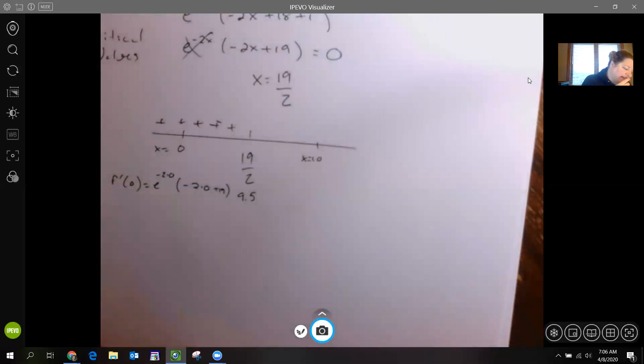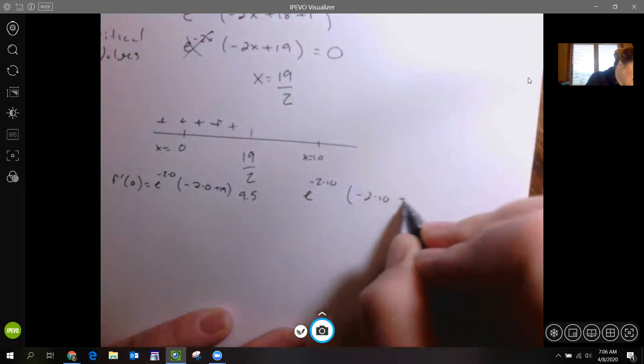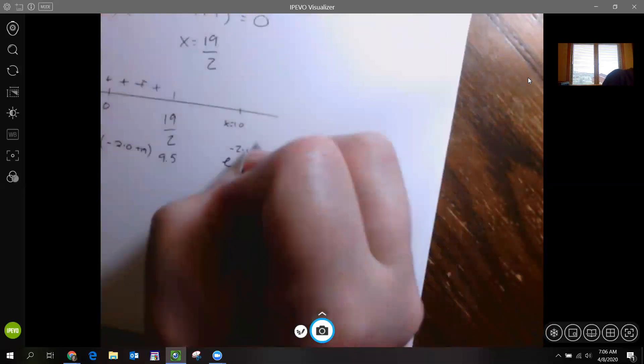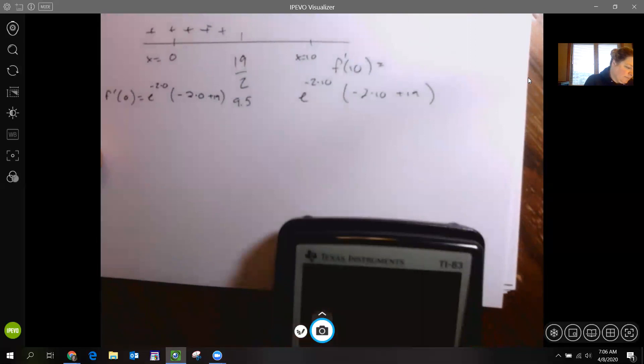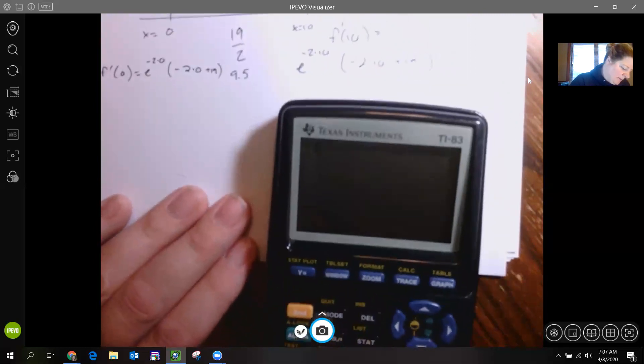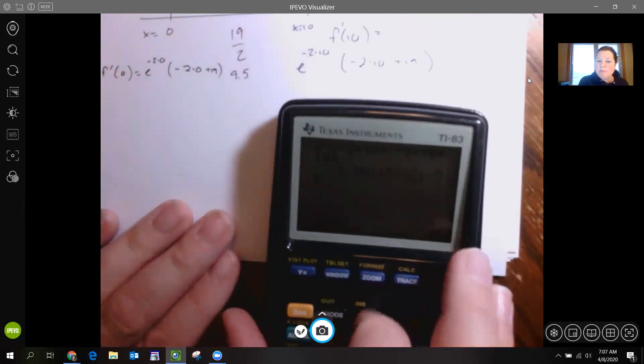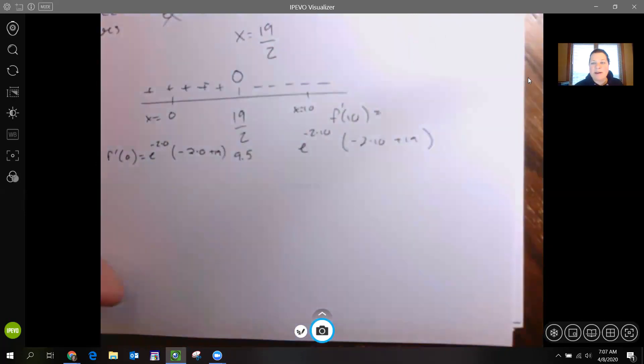And then let's put in 10. So we'd have e to the negative 2 times 10, and then negative 2 times 10 plus 19. E to the negative 2 times 10 times negative 2 times 10 plus 19 is a negative number. So this is negative. We are positive then negative, and this is a 0 critical value, not an undefined. It's a 0, and so we are increasing then decreasing.